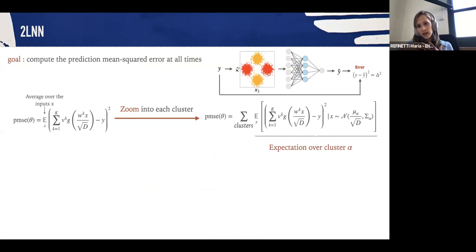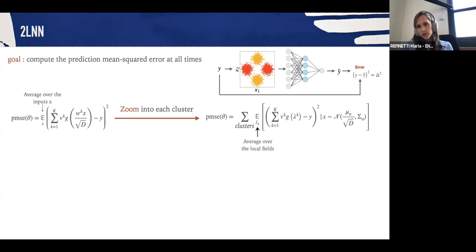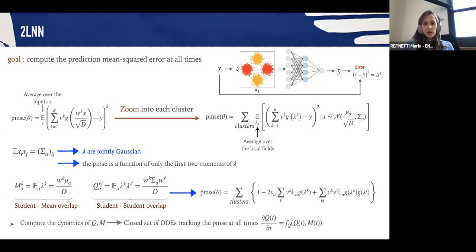How are we going to do this? The first step is to write the mean squared error as a sum over the conditional expectation of the input stemming from the different clusters. We're then going to notice that the input appears in this expression only for its low-dimensional projection on the weights of the student, and therefore I can replace the very high-dimensional expectation of the input over a load with a low-dimensional expectation over the local fields. Therefore, the mean squared error only depends on these local fields and is completely determined by the first two moments of these fields. These can be seen as a student-mean overlap and as a student-student overlap, and are commonly known as order parameters in statistical physics.